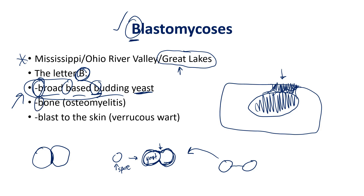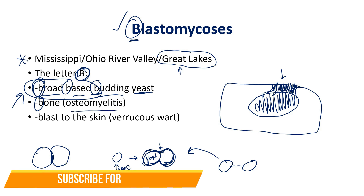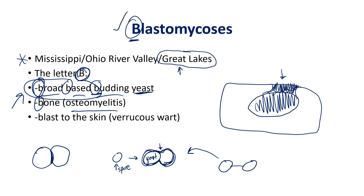The second B stands for 'bone' — hinting at osteomyelitis, which is very commonly seen in disseminated situations of blastomycosis.